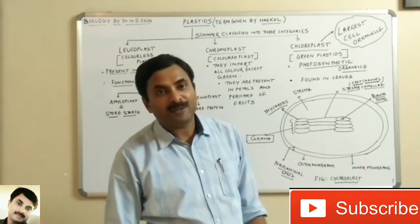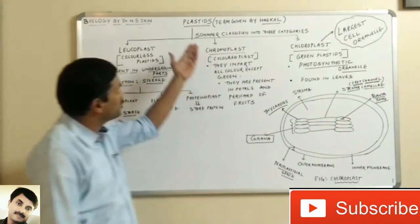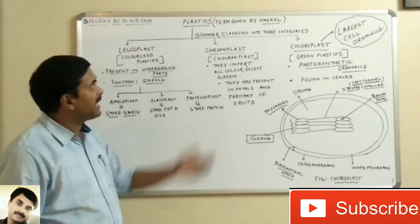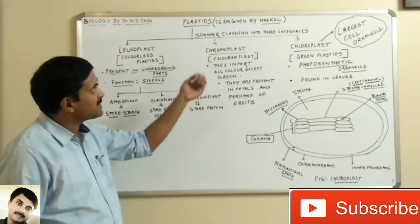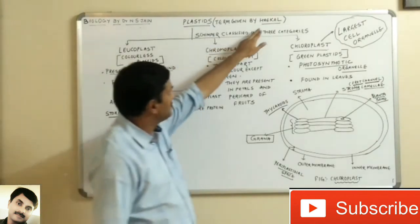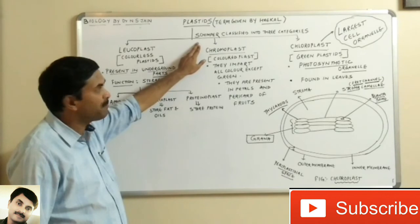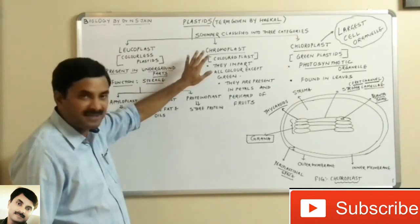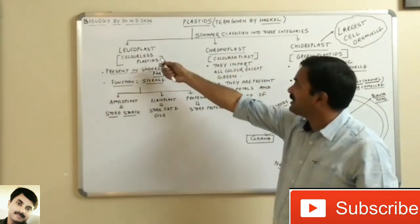Hello students, welcome to my channel Biology by Dr. NS Jain. Today we are going to study a topic related to cell biology known as the plastid. The term plastid was first given by a scientist known as Haeckel, and another scientist, Schimper, classified the plastids into three categories.